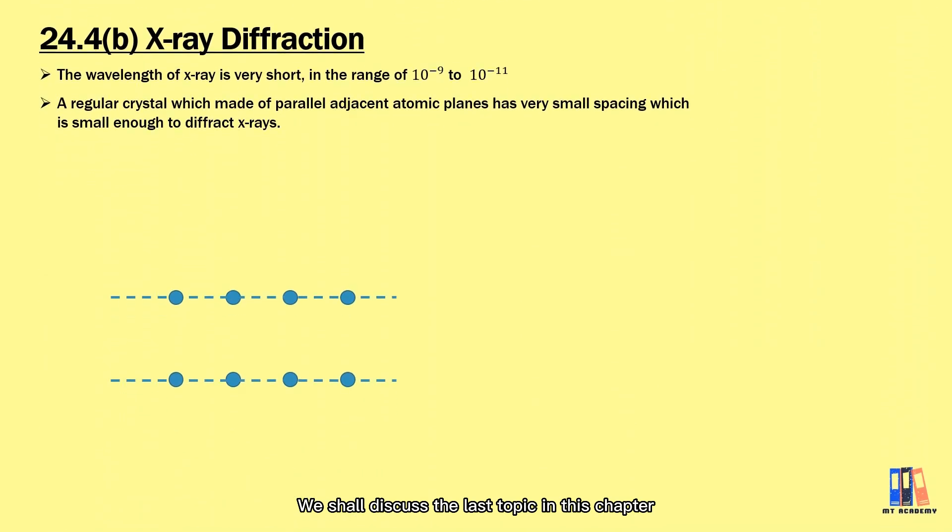We shall discuss the last topic in this chapter, which is X-ray diffraction. X-ray has a very short wavelength, which is not easy to be diffracted. We will use a regular crystal, which is made of parallel atomic planes that have very small spacing to diffract the X-ray.